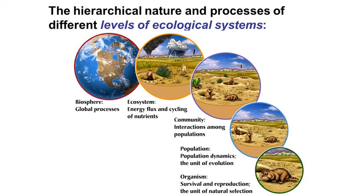The kinds of questions ecologists approach occur over a huge range of spatial and temporal scales. In terms of spatial scales, there is a hierarchy of ecological systems. At the bottom, we have the ecology of organisms — called autecology. Above that, we have populations, then communities, which are groups of populations interacting in a given area. Above that, we have ecosystems — multiple communities over a wider area — where ecologists focus on energy flux and nutrient cycling. At the top level, we have the biosphere, where ecologists work on global processes.